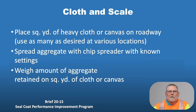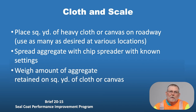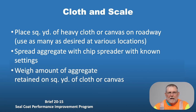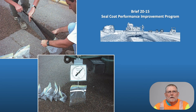For the cloth and scale method, place a square yard of heavy cloth or canvas — usually these come with a chip spreader. You can do them in as many locations as you would like. Spread the aggregate with the chip spreader at a known setting, then weigh the amount of aggregate retained on the square yard cloth or canvas and use the weight-to-volume conversions to check if it lines up with the desired cubic yards per square yard rate. Pictures here show using pads to collect the aggregate, then placing them in zip-lock bags and using a milk scale to record the weights.